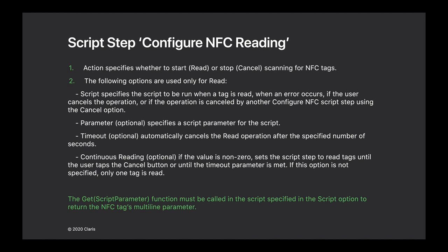You can set up a timeout if you're not getting information back from the NFC. And you can do what we call continuous reading — where unless the value is zero, the script step can keep going and getting information from various NFC tags. When you get the data back from the NFC tag, with the Get Script Parameter function, you'll be able to get all the information fed inside the tag into multiple parameters.